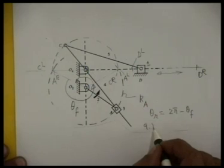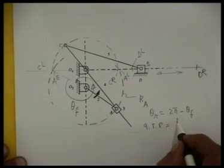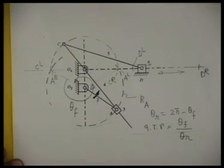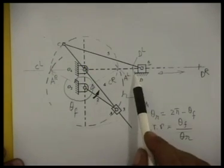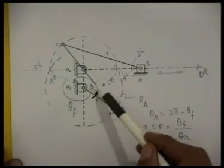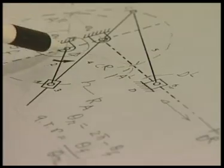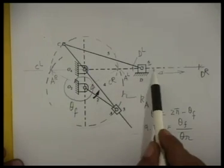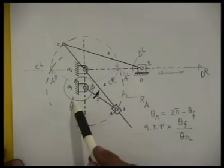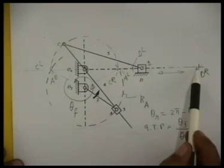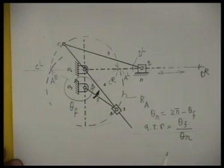The quick return ratio is theta_F divided by theta_R. Since the stroke length can be changed by changing O4C, which plays no role in determining the lines O2AL and O2AR, the quick return ratio remains the same even if we change O4C and thus the stroke length. This is the key property of the Whitworth quick return mechanism — its quick return ratio is independent of the stroke length.